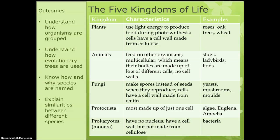Animals feed on other organisms. They are multicellular — so they've got more than one cell — but they don't have a cell wall. Examples include slugs, ladybirds, lions, humans, dogs, cats — pretty much any animal.